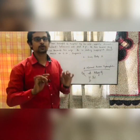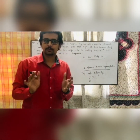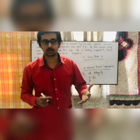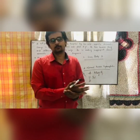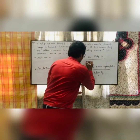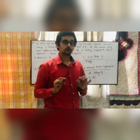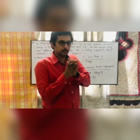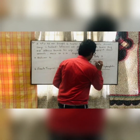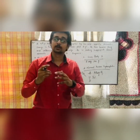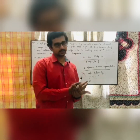Next, in Lewy Body Dementia, patients usually have fluctuating cognition — a delirium-like state where the patient doesn't know where they are. Patients should also have well-formed visual hallucinations. The question should specifically describe visual hallucinations for this diagnosis.